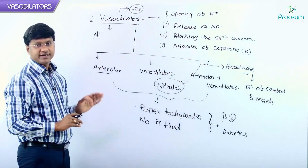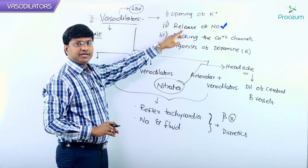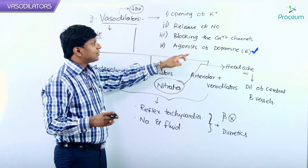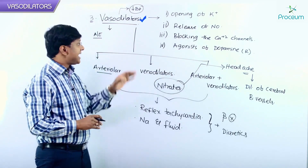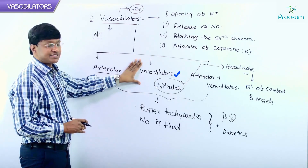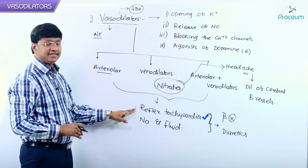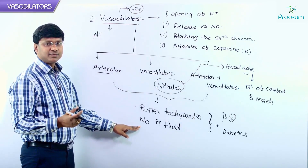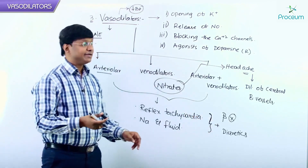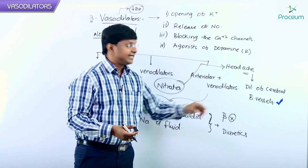In summary, vasodilatory action may be due to opening of potassium channels, release of nitric oxide, blocking of calcium channels, or agonistic action at dopamine receptors. Vasodilators include arteriolar vasodilators, venodilators, and arteriolar plus venodilators. The important adverse effects are reflex tachycardia and sodium and fluid retention — hence these drugs should be given with beta blockers or diuretics — and headache due to dilatation of cerebral blood vessels.